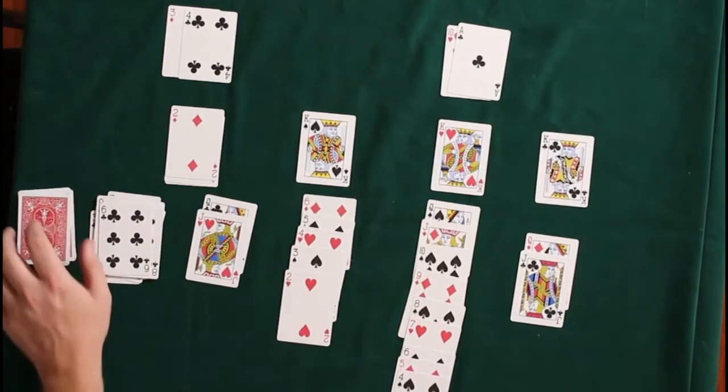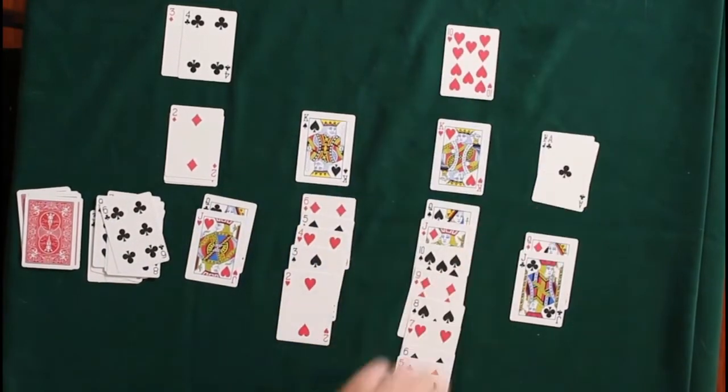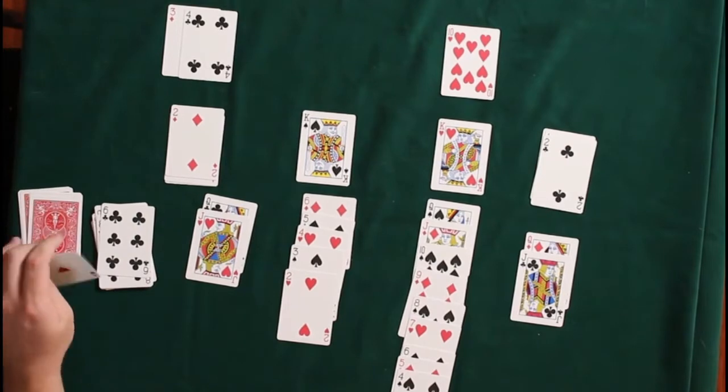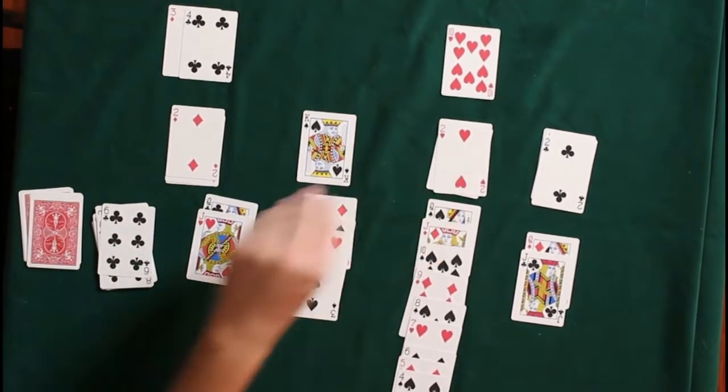Or, excuse me, the king of clubs. Also waiting for the ace of hearts. Because that, yep, there we go. That opens up a lot of possibilities for us.